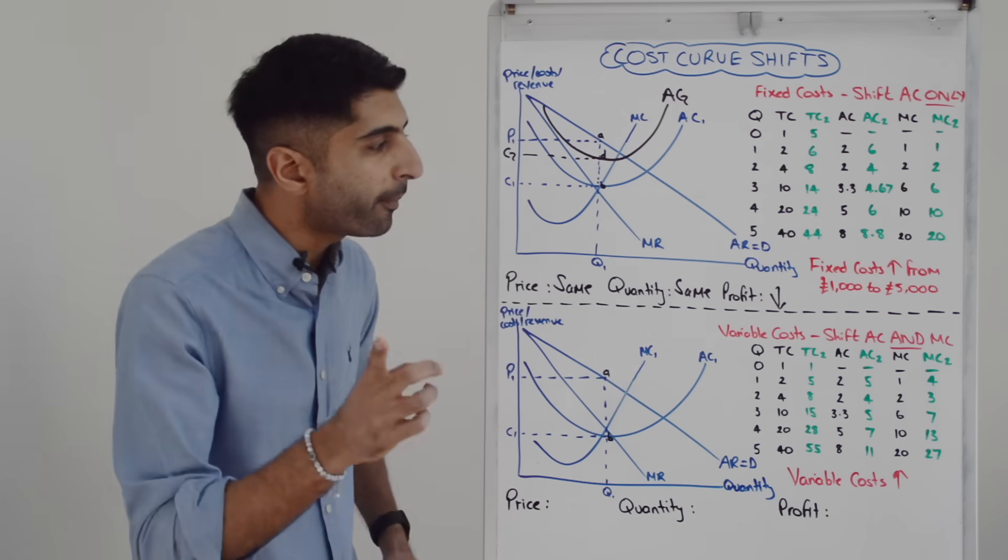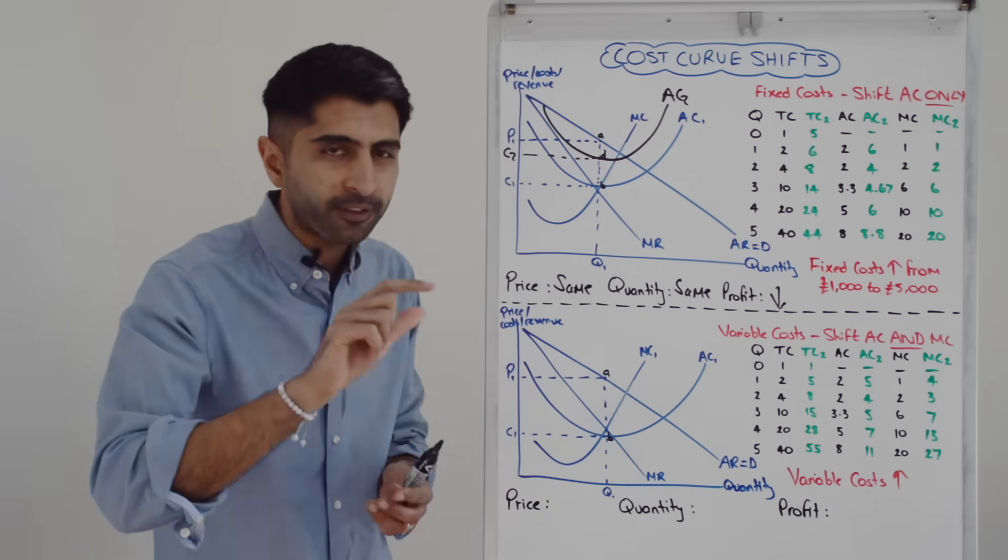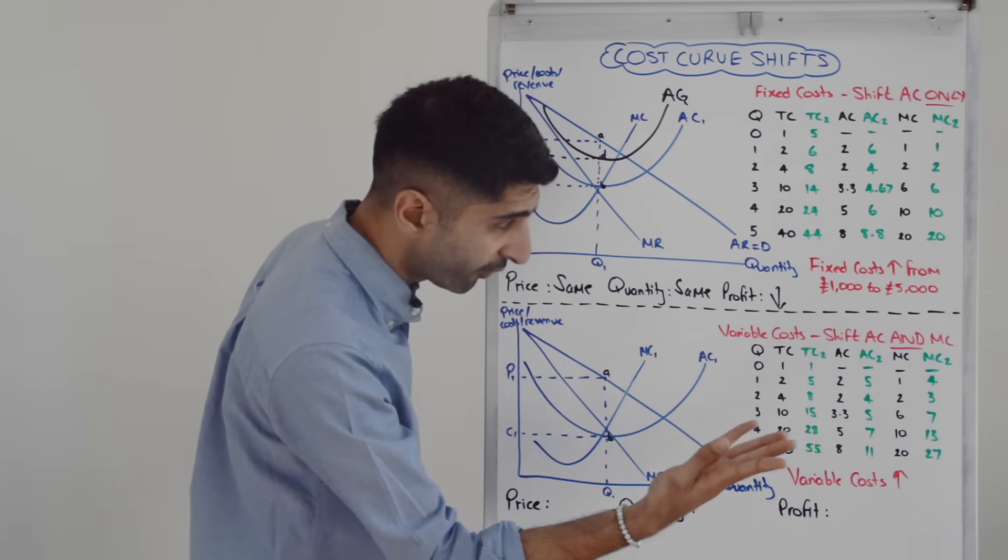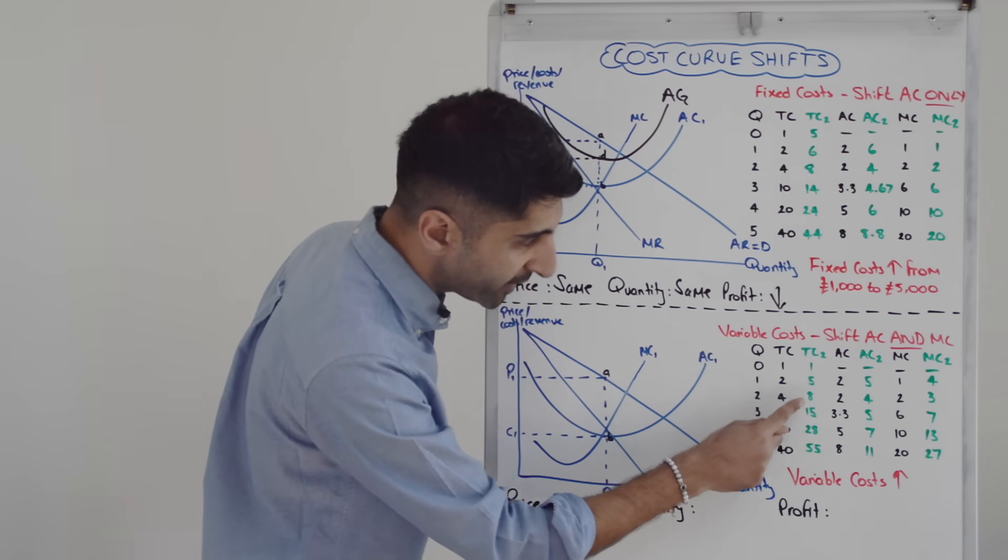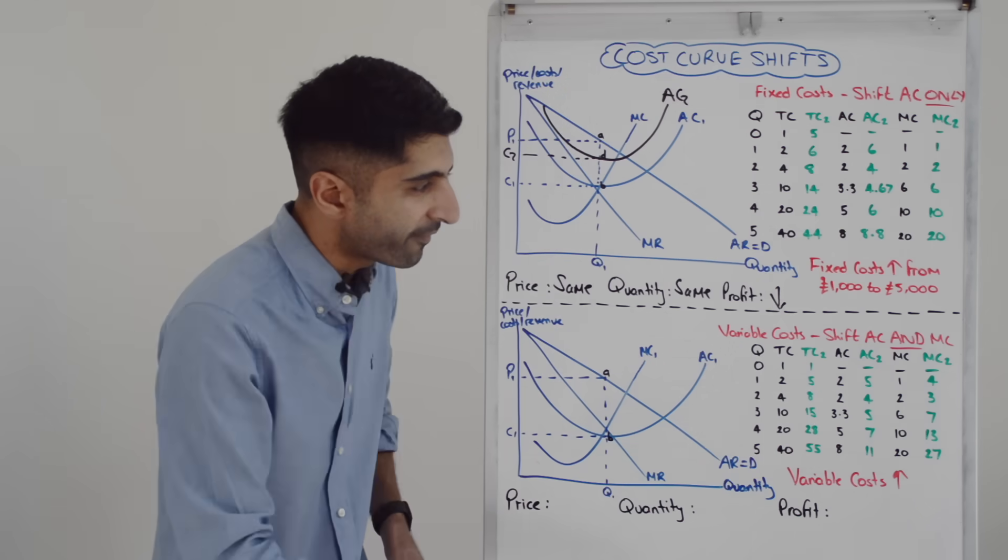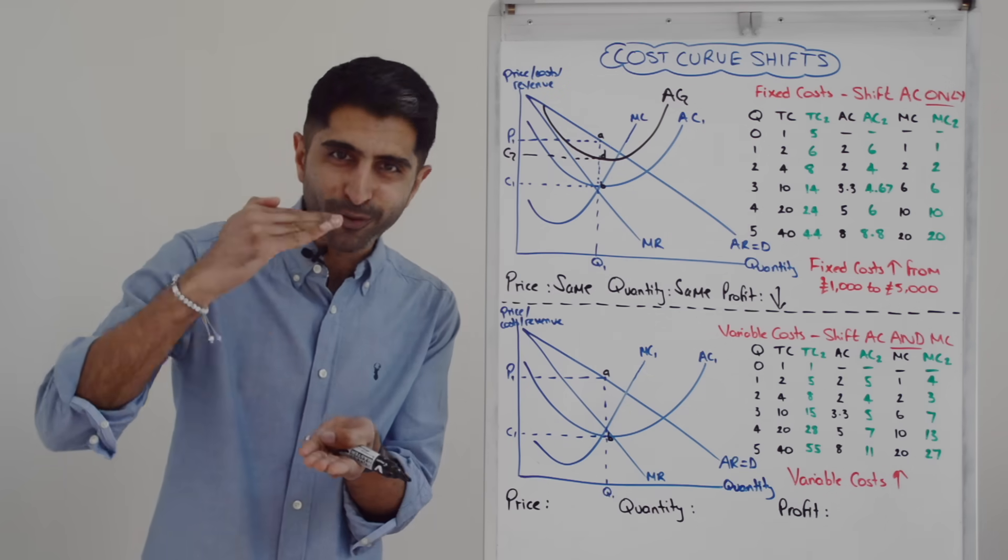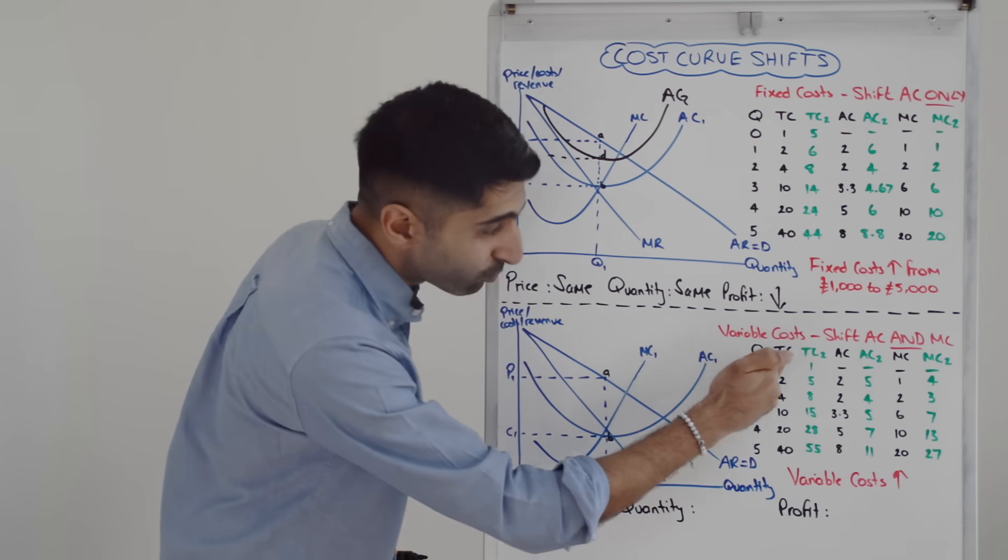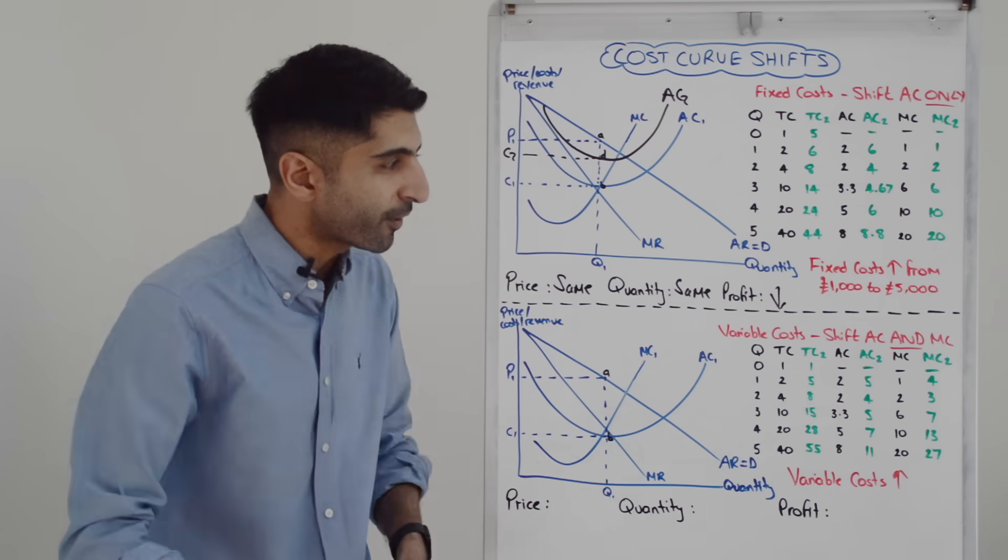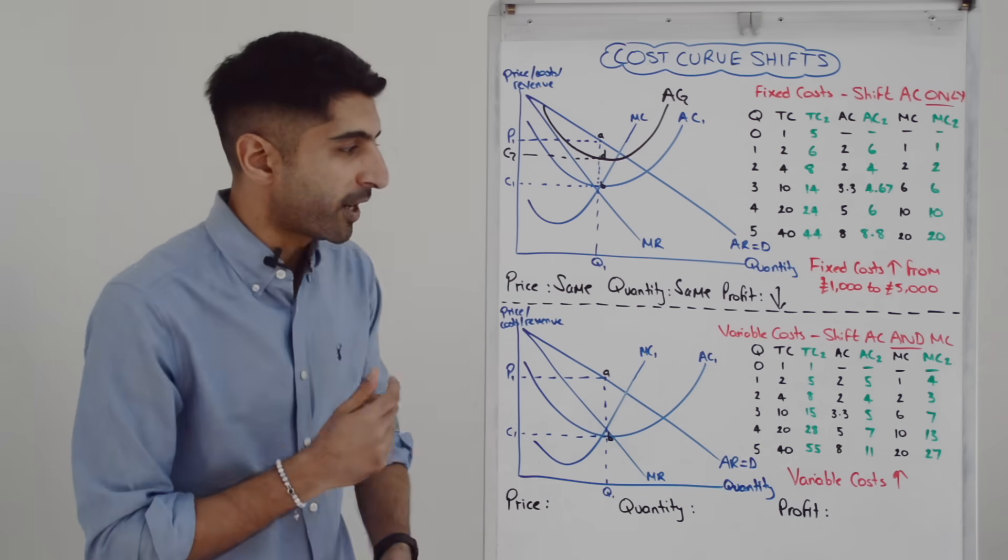We're going to be shifting this curve upwards, but look at marginal cost. To work out marginal cost, simply look at the change in TC. From 1 to 5 is 4, 5 to 8 is 3, 8 to 15 is 7, 15 to 28 is 13, 28 to 55 is 27. And compared to marginal cost prior, these are higher marginal cost numbers. So it's clear that the rate of change of total cost is affected when there is a change in variable costs. And that's why you shift not just AC, but MC in this situation as well.